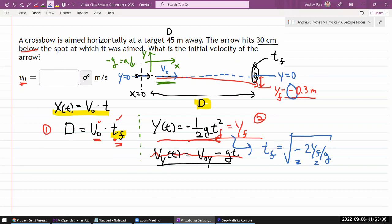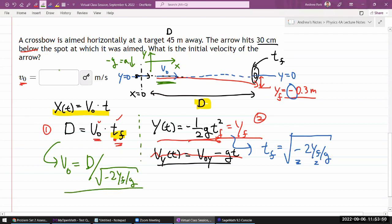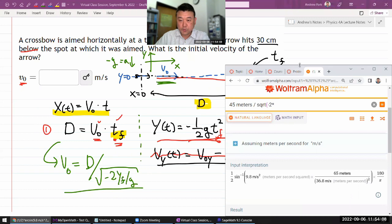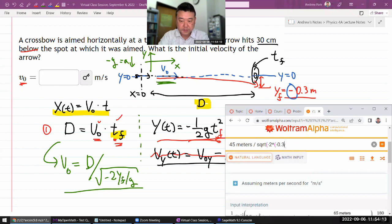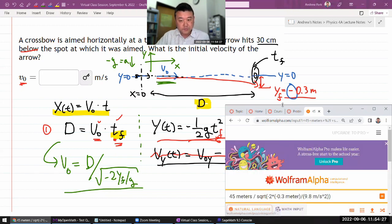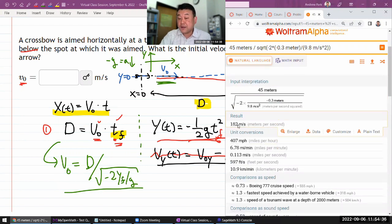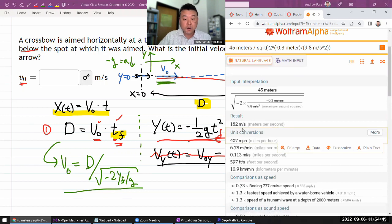Plugging in here and then imagining solving for v naught, what you should end up with is v naught is equal to d divided by square root of minus two y final over g. Let me plug this into WolframAlpha. So distance was 45 meters divided by square root of minus two times the error here. I converted that already into minus 0.3 meters divided by g or 9.8 meter per second squared. I like putting in units, especially when I'm doing calculation with WolframAlpha because it also ends up doing my dimensional analysis for me. When it interprets my input correctly and does the calculation correctly, the final answer should be in the correct expected unit. If it's not, that might indicate a mistake in some of the algebra steps. The answer is 182 meters per second.